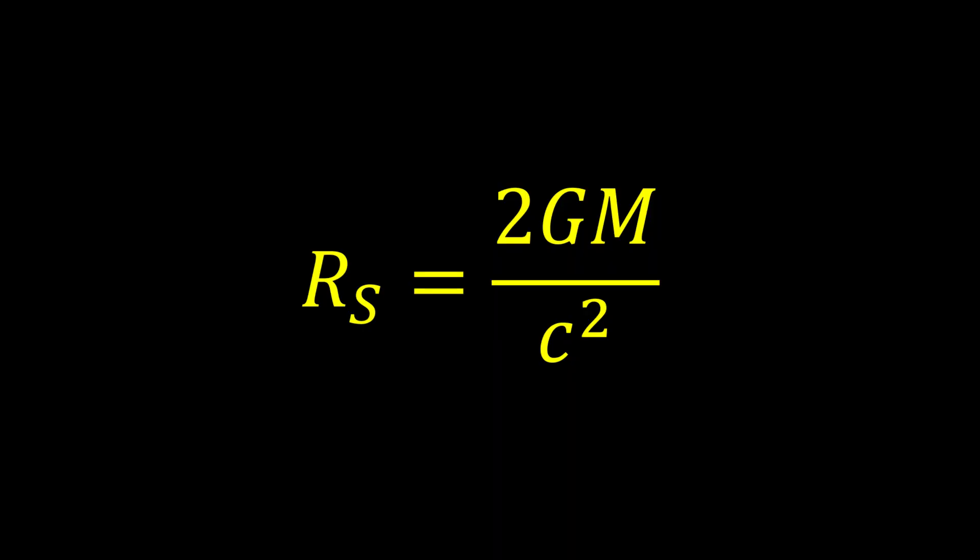To work out the radius of a black hole out to the event horizon, which is the last point where light could escape from its gravitational pull, we need this equation. RS represents the Schwarzschild radius, with G being a constant relating to gravity, M being the mass of the black hole in kilograms, and C being the speed of light.